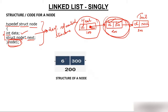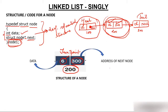In the diagram, there is a node having data 6, and 300 as the address of the next node. The address 200 is the address of this current node. So 6 is the data, 300 is the address of the next node, and this is the structure of a node.